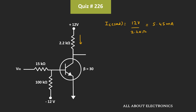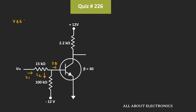Now, assuming this transistor is operating in the active region, let's find the value of the base current. Let's say this current is equal to Ib, while this current is I1 and this current is I2.